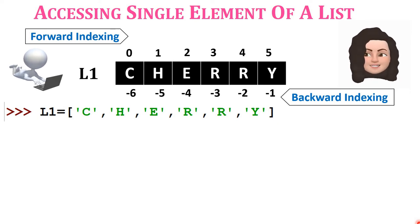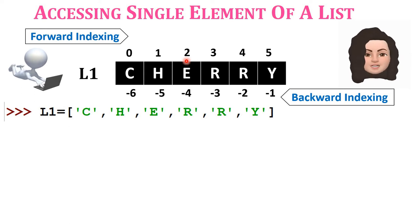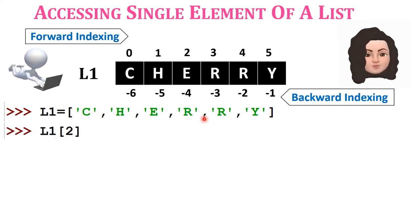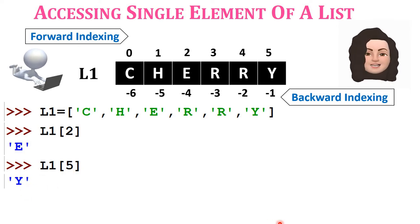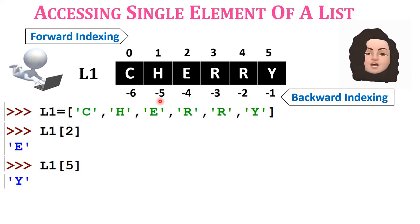To access element 'E', its forward index is 2, so L1[2] gives output 'E'. To access 'Y' using forward indexing, the index is 5, so L1[5] gives 'Y'. To access 'H' using backward indexing, the index is minus 5, so L1[-5] gives output 'H'.